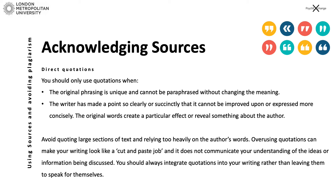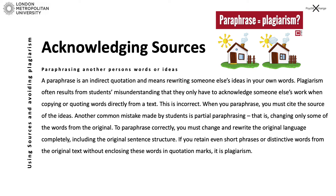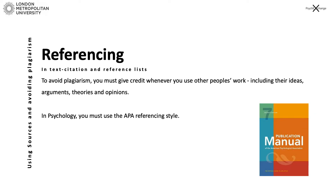If you do choose to use direct quotes, please ensure they are integrated into your writing and not just left alone to speak for themselves. The second way to appropriately use sources is by paraphrasing, also referred to as indirect quoting — basically rewriting somebody else's ideas in your own words, but ensuring everything is properly referenced. Plagiarism comes about here in two ways: by students not referencing, and by students only partially rephrasing — changing only a few words here and there. You have to change and rewrite the original text completely. By keeping short phrases or distinctive words without speech marks, you are plagiarising.